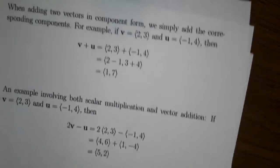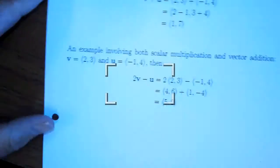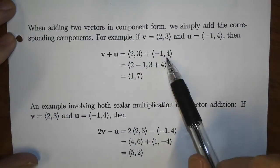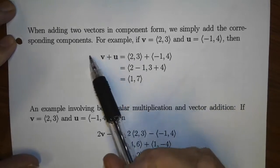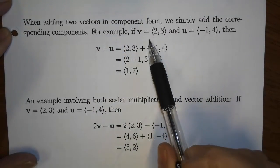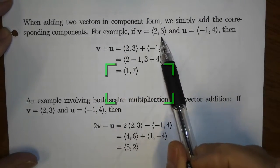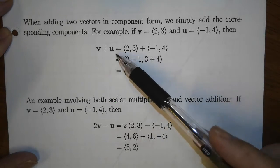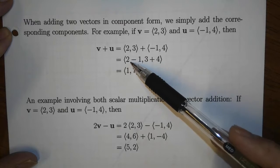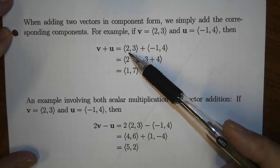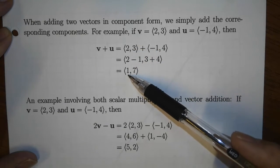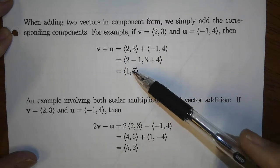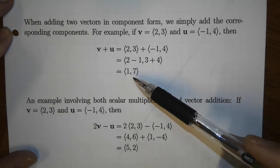When we add two vectors together in component form, we simply add the corresponding components. For example, if vector v is ⟨2, 3⟩ and vector u is ⟨-1, 4⟩, then to compute the sum we add corresponding components: 2 + (-1) = 1, and 3 + 4 = 7. So the sum v + u is ⟨1, 7⟩.